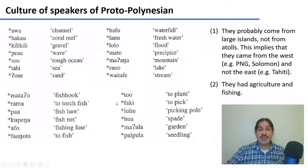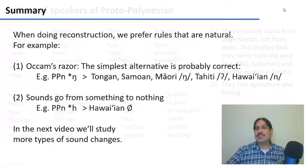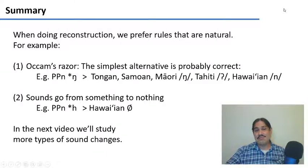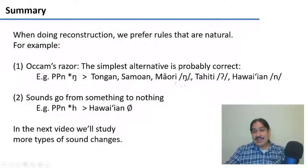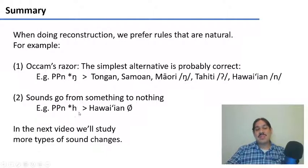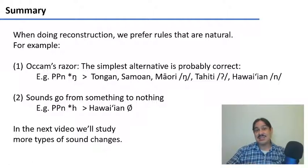In summary, when we do reconstruction, we prefer rules that are natural in language change. For example, if most of the languages have a velar nasal, this is what we'll reconstruct in the proto-language. We prefer rules that go from something to nothing, like H to zero. And in the next video, we'll study more types of sound changes in languages.